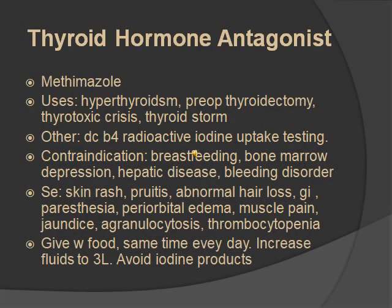Thyroid hormone antagonists slow down or stop thyroid hormone production. The medication is methimazole. It's used for hyperthyroidism, pre-op thyroidectomy, thyrotoxic crisis, and thyroid storm. Discontinue before radioactive iodine uptake testing. Contraindicated in breastfeeding, bone marrow depression, hepatic disease, and bleeding disorders. Side effects include skin rash, itching, abnormal hair loss, GI issues, paresthesia, periorbital edema, muscle pain, jaundice, agranulocytosis, and thrombocytopenia. Give with food at the same time every day, increase fluids to three liters, and avoid iodine products.